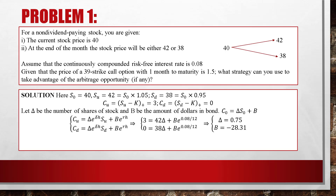And 0 = 38δ + B × e^(0.08/12). Solving for delta and B, we get delta = 0.75 and B = -28.31. From here, the theoretical price of the call option is C0 = 1.69. But the given market price is 1.5.